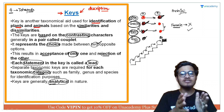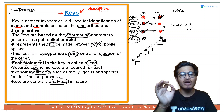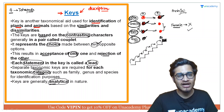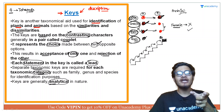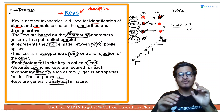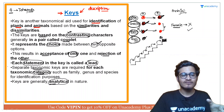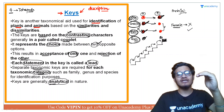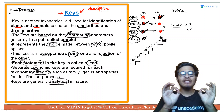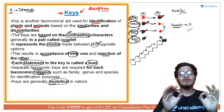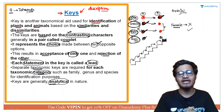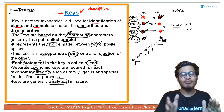यहाँ पर सबसे important word आता है वो है 'couplet'. जब एक pair होता है contrasting characters का, तो उस pair को couplet बोलते हैं — couple दो लोगों का होता है. और हर statement जो key में होती है, जैसे आप step दर step चड़ते जा रहे हो, that is called a lead. So couplet और lead याद रखना है. Keys analytical हैं nature में, plants और animals दोनों के लिए, और हर taxonomical category के लिए अलग-अलग key बनाई जा सकती है.